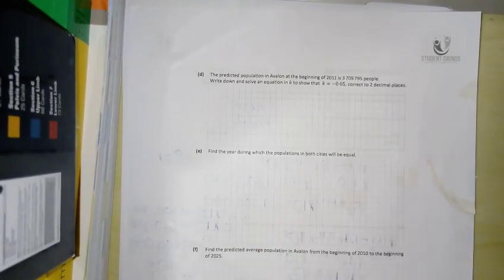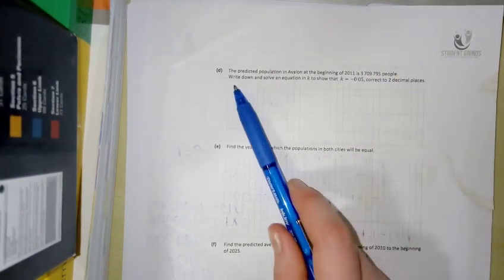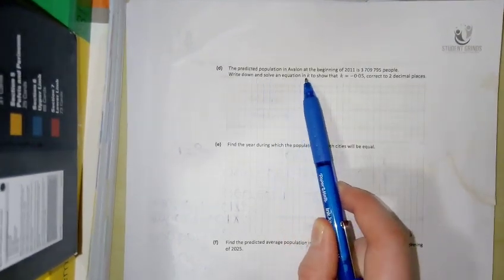In part D of that question, we're told the predicted population in Avalon at the beginning of 2011 is this number here. So we're asked to write down and solve an equation in K to show that K is equal to this.